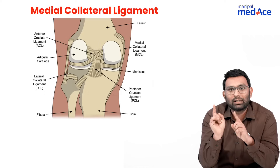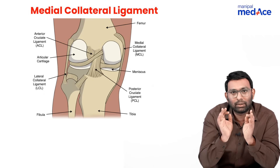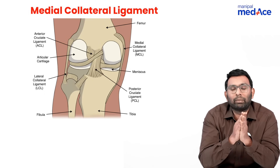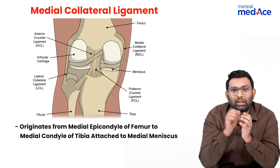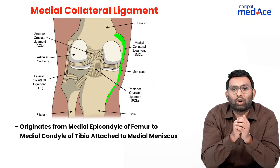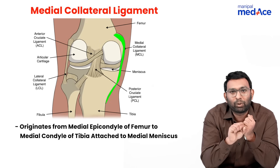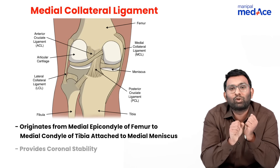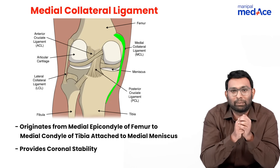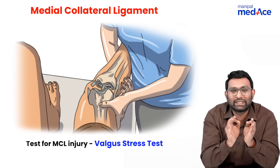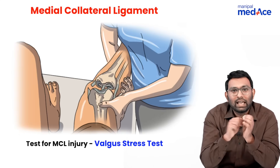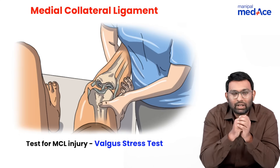The second structure is the MCL, also called the medial collateral ligament. The medial collateral ligament attaches from the medial epicondyle of the femur to the medial condyle of the tibia, and it provides coronal stability, that is valgus stability. The test done to look for MCL injury is the valgus stress test.